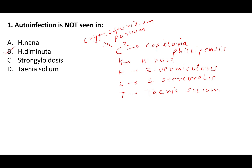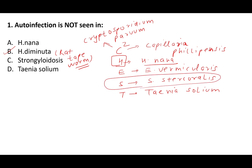The answer is H. diminuta. Beware — the H in CHEST stands for H. nana, not H. diminuta. H. diminuta is the rat tapeworm, also termed the rat tapeworm or Hymenolepis diminuta — it does NOT show auto-infection. H. nana, the dwarf tapeworm, does show auto-infection. Strongyloides stercoralis also shows auto-infection and is more common in immunocompromised/HIV-positive patients.